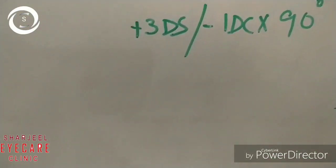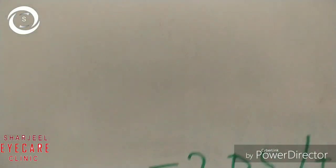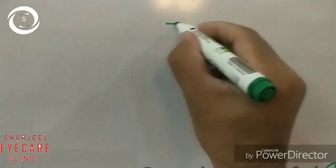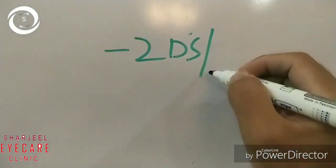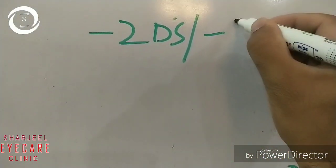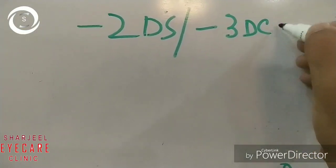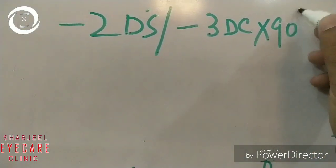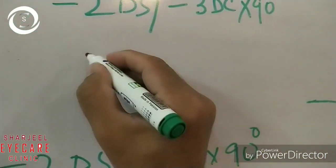Now we will show you another example. Take minus 2 as a sphere, minus 3 cylinder at 90 degrees. Add them: minus 5.